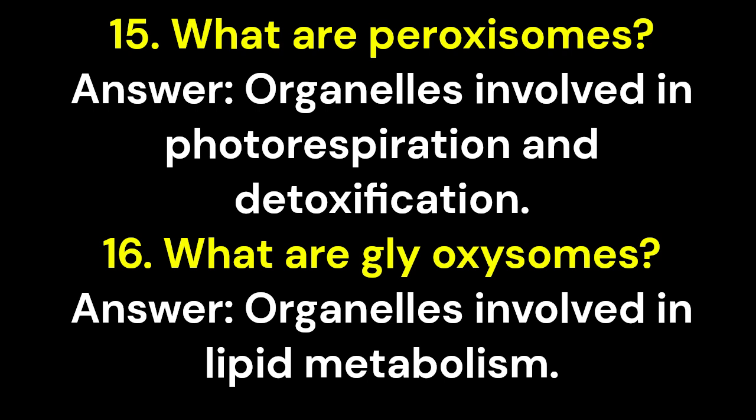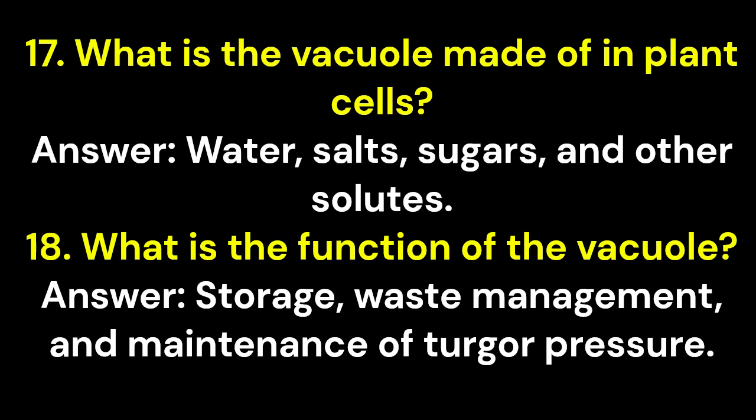15. What are peroxisomes? Answer: Organelles involved in photorespiration and detoxification. 16. What are glyoxysomes? Answer: Organelles involved in lipid metabolism. 17. What is the vacuole made of in plant cells? Answer: Water, salts, sugars, and other solutes. 18. What is the function of the vacuole? Answer: Storage, waste management, and maintenance of turgor pressure.